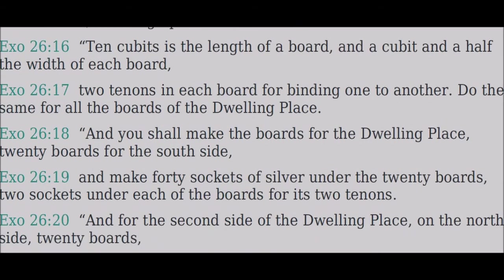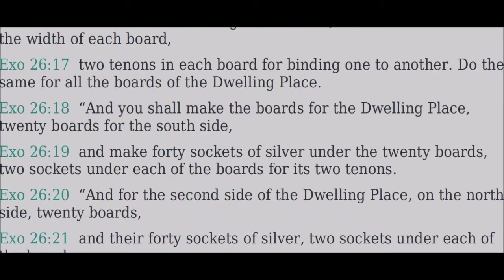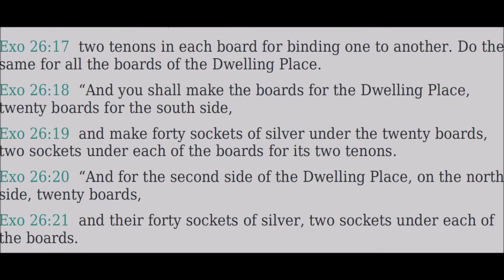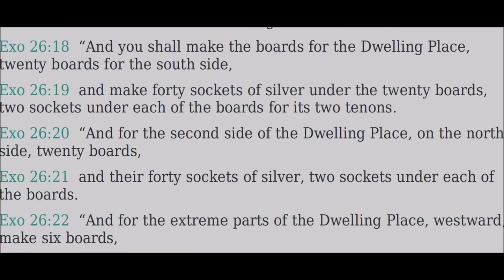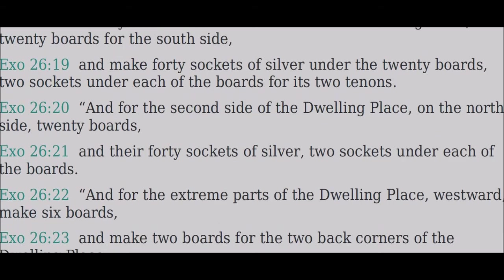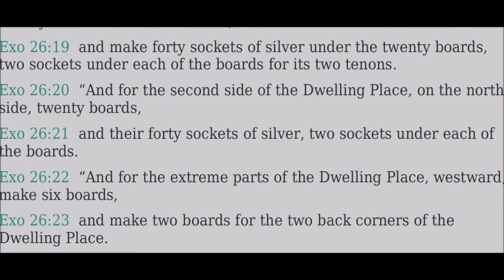Make the boards for the dwelling place — twenty boards for the south side. Make forty sockets of silver under the twenty boards, two sockets under each of the boards for its two tenons. For the second side of the dwelling place, on the north side, twenty boards, and there forty sockets of silver, two sockets under each of the boards.